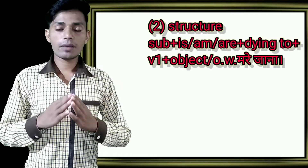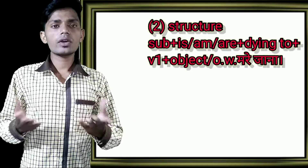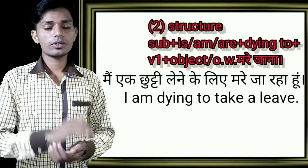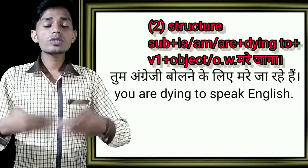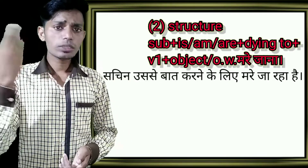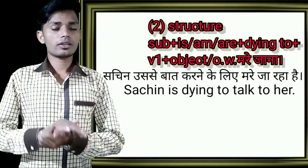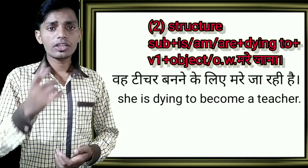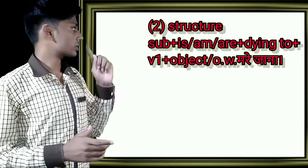Our next spoken English structure uses 'subject + is/am/are + dying to + verb'. For example: I am dying to take a leave. You are dying to speak English. Sachin is dying to talk to her. She is dying to become a teacher. These sentences are made using this structure.